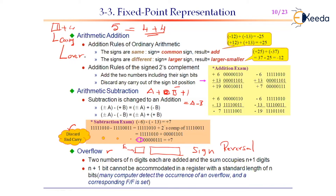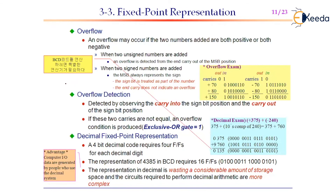To detect overflow, we use an XOR gate. The carry into the sign digit and the carry out from the sign digit are connected to the XOR gate. If the XOR gate output equals 1, we are in an overflow situation; if it equals 0, there is no overflow. This is how overflow is detected in fixed point representation.